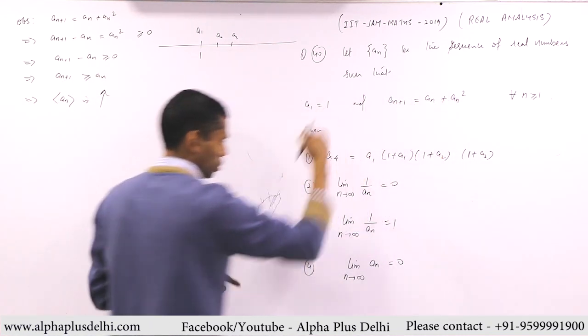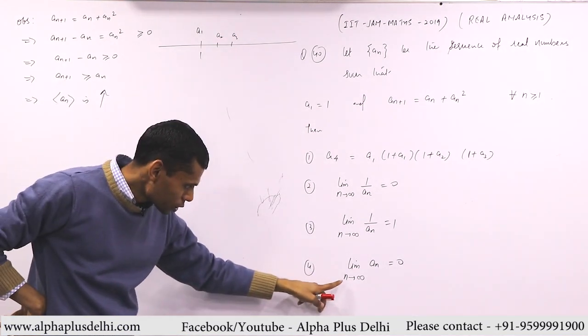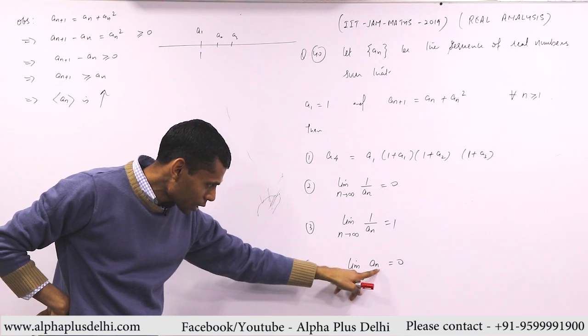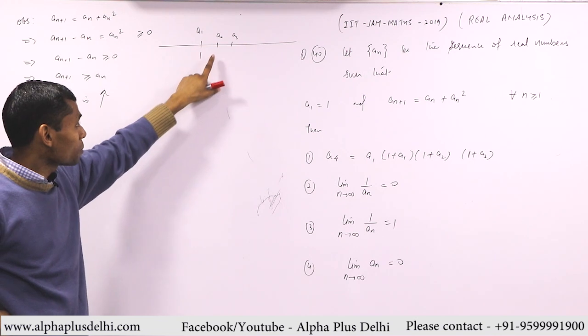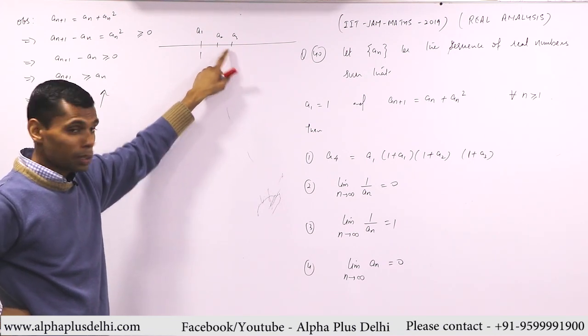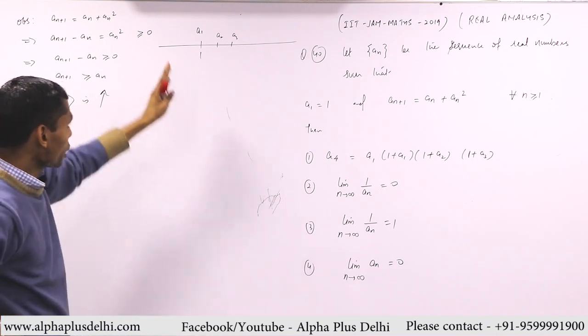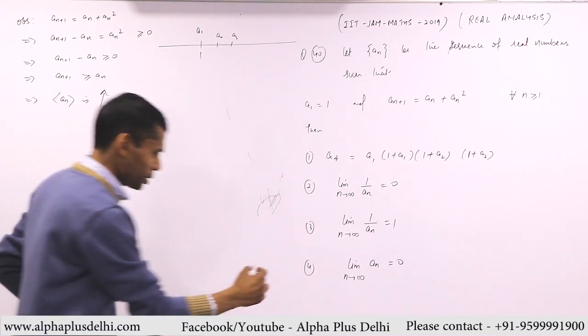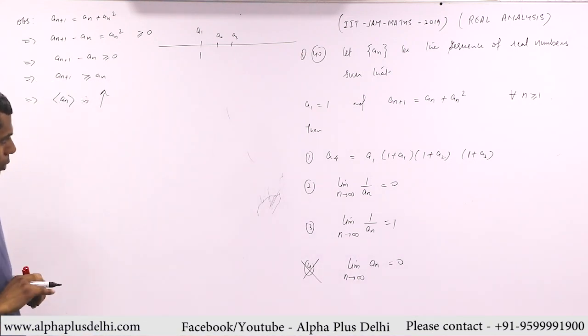Now let's look at the options. Among these four options, look at the last option. What is limit n goes to infinity a_n? He is saying it should be 0. But the first term is 1, second term is moving further away from 1, third term is also moving away from 1. This is all going beyond 1. So how can the limit be zero? Zero is to the left. So the limit cannot be zero. Immediately this fourth part is wrong.